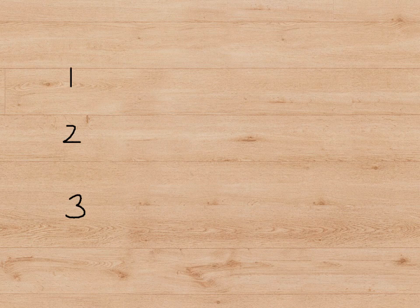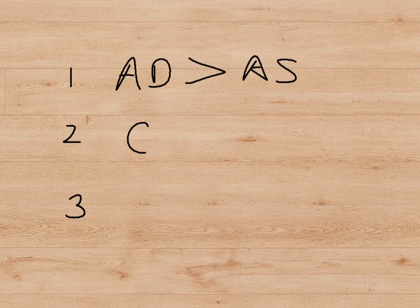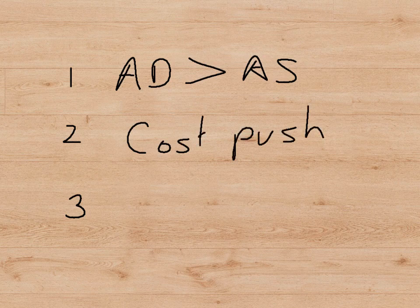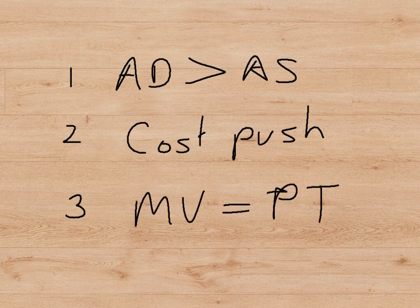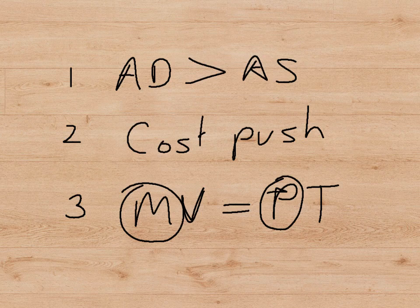There are three types of inflation. First, demand pull — when aggregate demand runs ahead of aggregate supply. Second, cost push — when the cost of a factor of production rises rapidly, causing the price of all goods made using that factor to rise. Third, money supply inflation — when the money supply rises uncontrollably, it leads to an increase in the price level, provided V and T don't change.